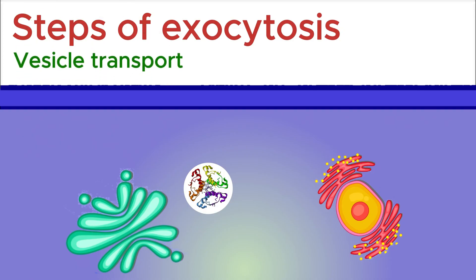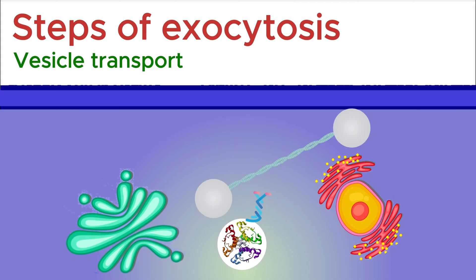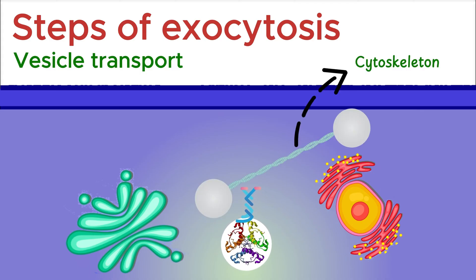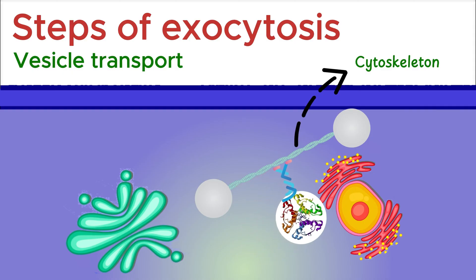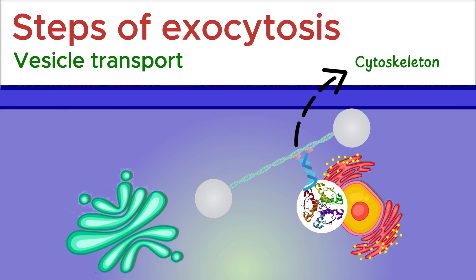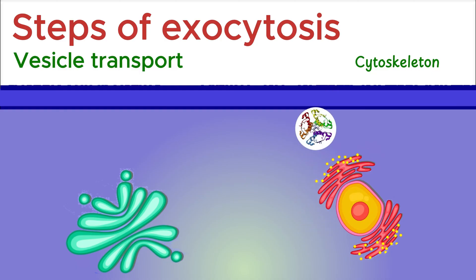After the vesicle is formed, it needs to move toward the cell membrane. This vesicle contains the material that has to go out of the cell, like insulin. The movement happens inside the cell along tiny tracks called the cytoskeleton. Special proteins help the vesicle travel safely to the membrane — think of it like a delivery cart moving on tracks to reach the gate. Once the vesicle reaches near the cell membrane, it's ready for the next step.